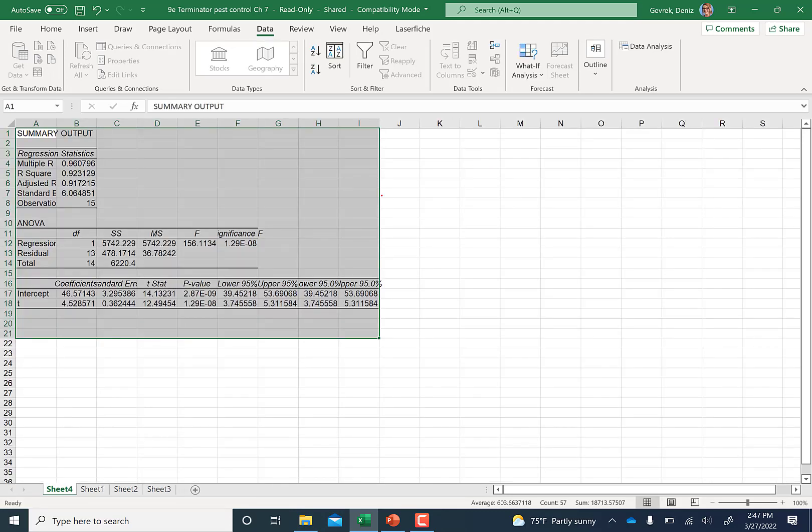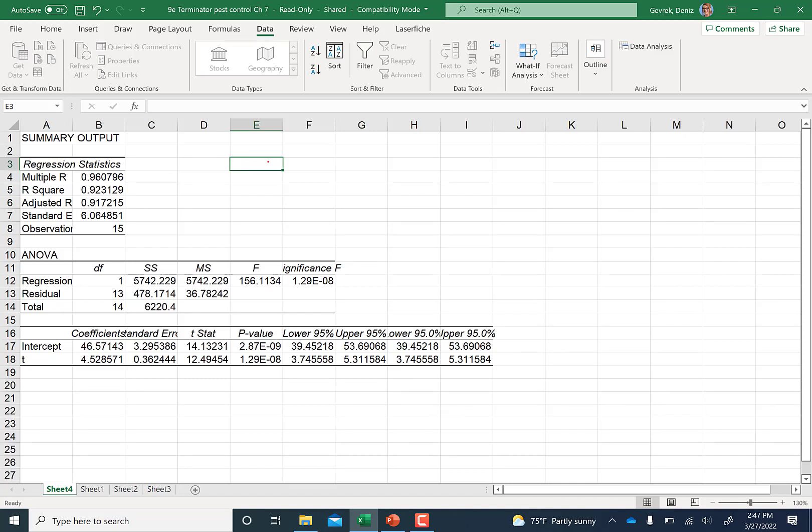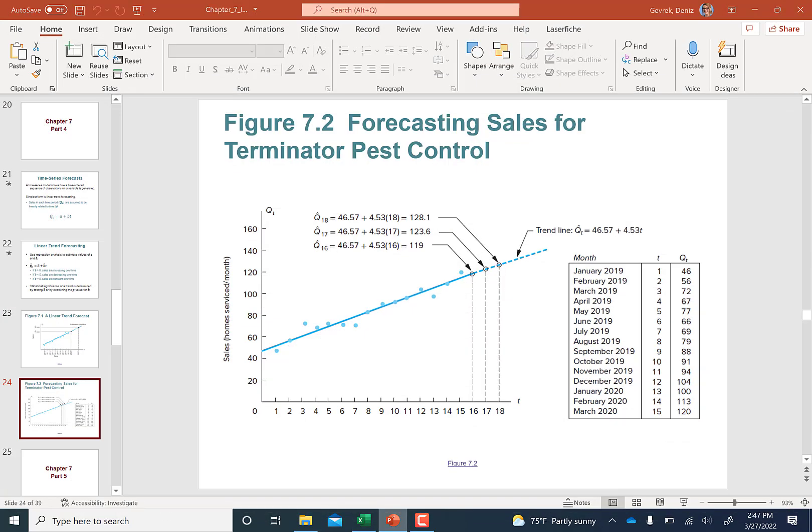So we found this estimated equation. It looks like Qt hat - the intercept is this. I'm going to grab maybe a couple of decimal places: 46.57 plus, what is B hat? B hat is 4.52 times little t. So this is what your estimated equation looks like: Qt hat equals 46.57 plus 4.52 t.